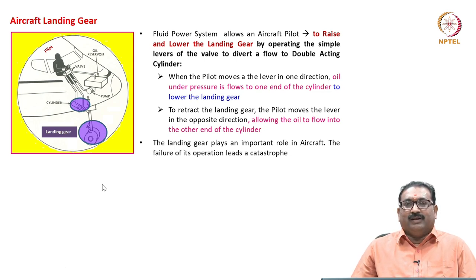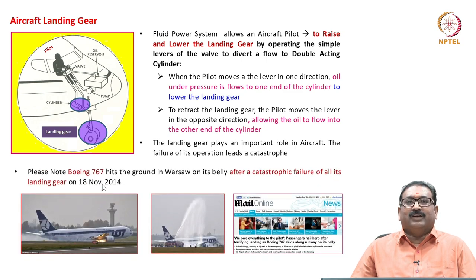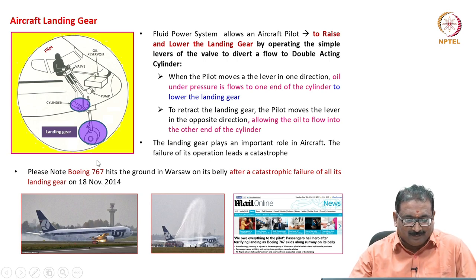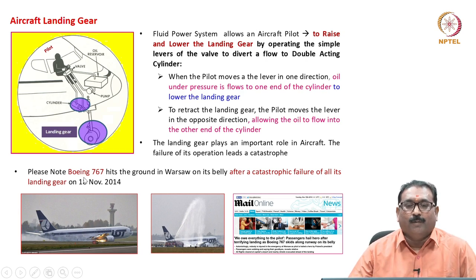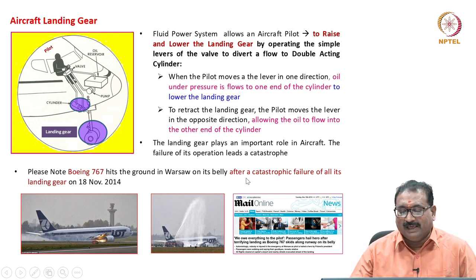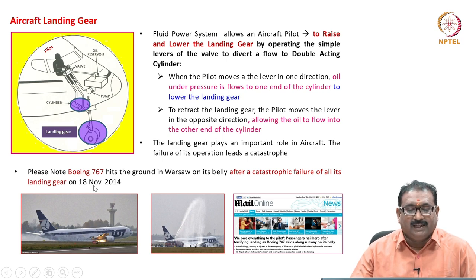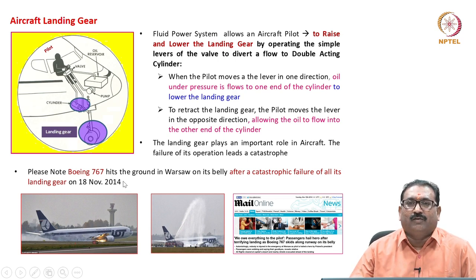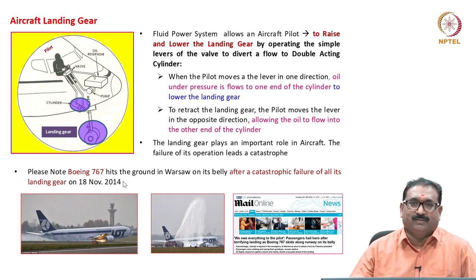The failure of its operation leads to catastrophic failures. Do not think all hydraulic systems are 100 percent safe. For example, please note: Boeing 767 hit the ground in Warsaw on its belly after a catastrophic failure of the landing gear on 18th November 2014. This means the operation of all components is very, very essential when you are using airworthy standards.